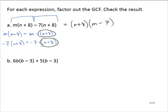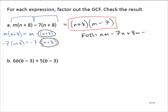Now, how do we check our work? I'll multiply out the factored form. Let's check the result by multiplication using the FOIL method. FOIL gives me n times m, minus 7n, plus 8m, minus 56. There are no like terms.